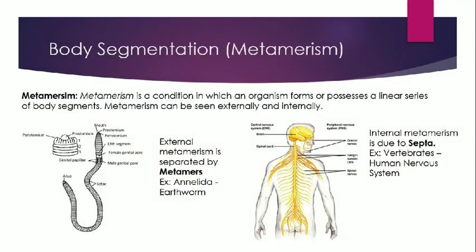One important characteristic of animals is body segmentation, known as metamerism. Some animals possess segments in their body — for example, the earthworm, whose body comprises almost 120 to 130 segments viewable externally. In the case of humans, we have internal metamerism — for example, the central nervous system is divided into various branches due to the formation of septa.